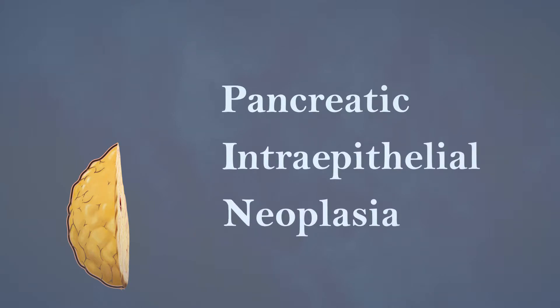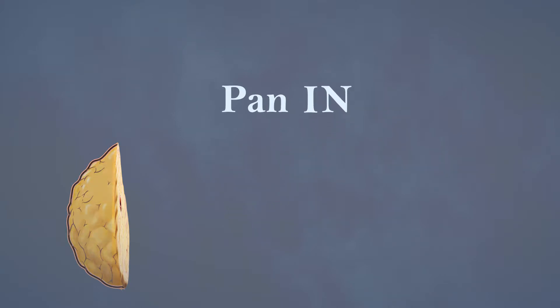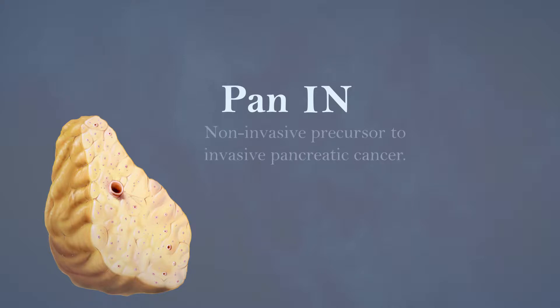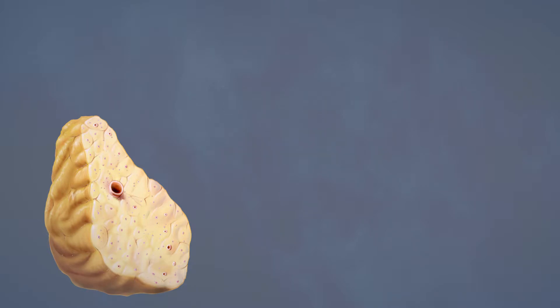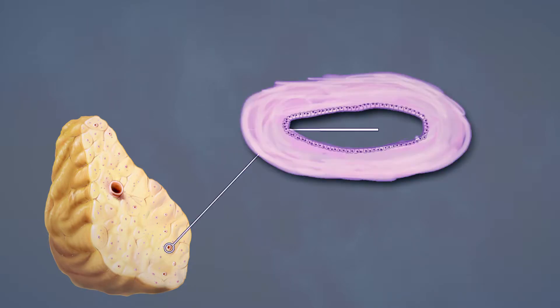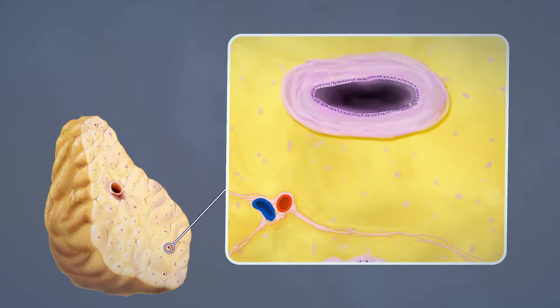Pancreatic intraepithelial neoplasia, or PanIN, is an early non-invasive precursor to invasive pancreatic cancer. PanINs are the result of genetic mutations in ductal cells. They arise in pancreatic ducts smaller than 5 mm.